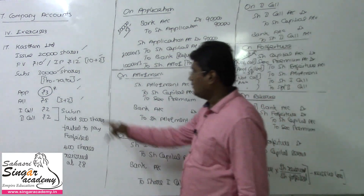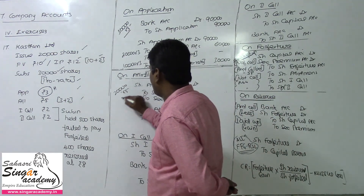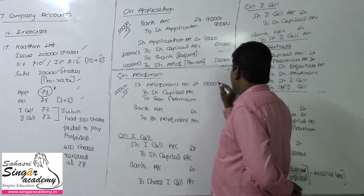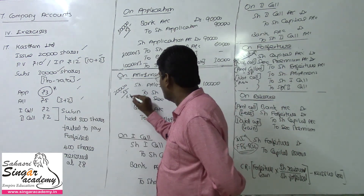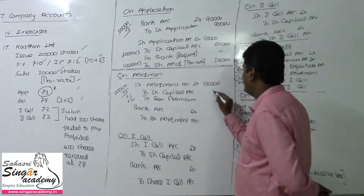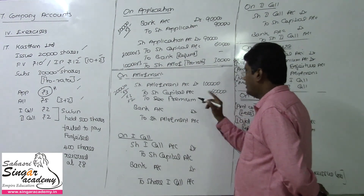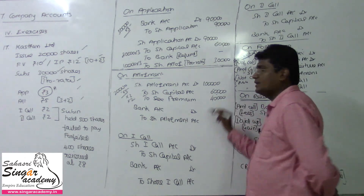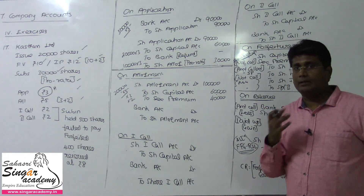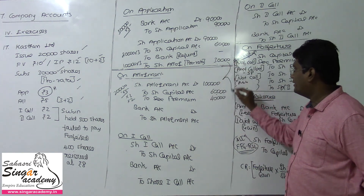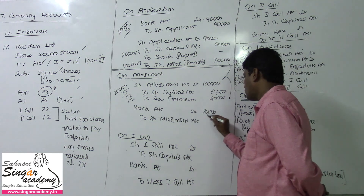On allotment, we are going to receive ₹5 per share for 20,000 shares, which is ₹1,00,000. Of this, ₹60,000 goes to share capital (3 rupees per share) and ₹40,000 goes to securities premium (2 rupees per share). However, since ₹30,000 excess application money is already held, the net bank receipt on allotment is only ₹70,000.